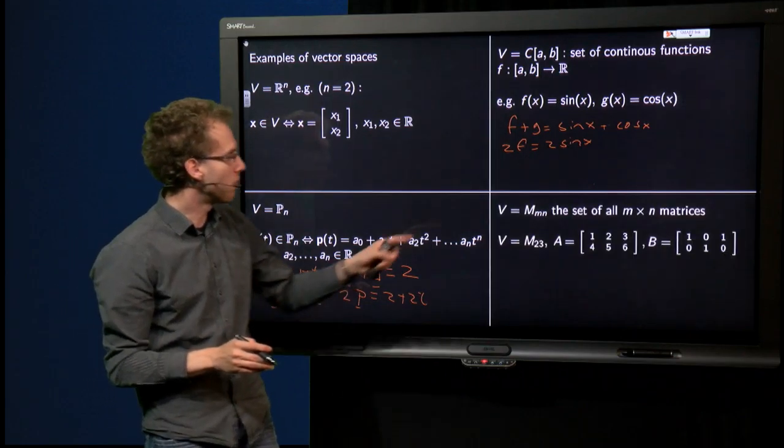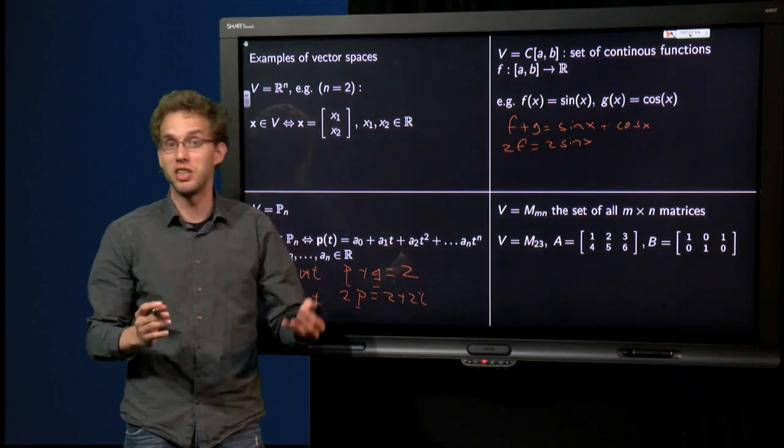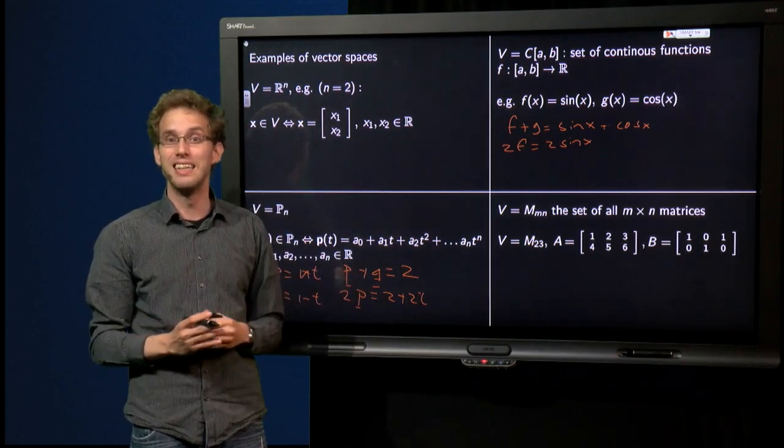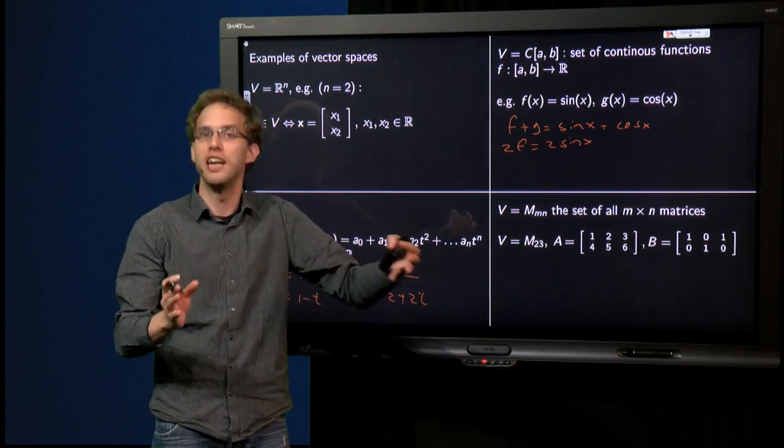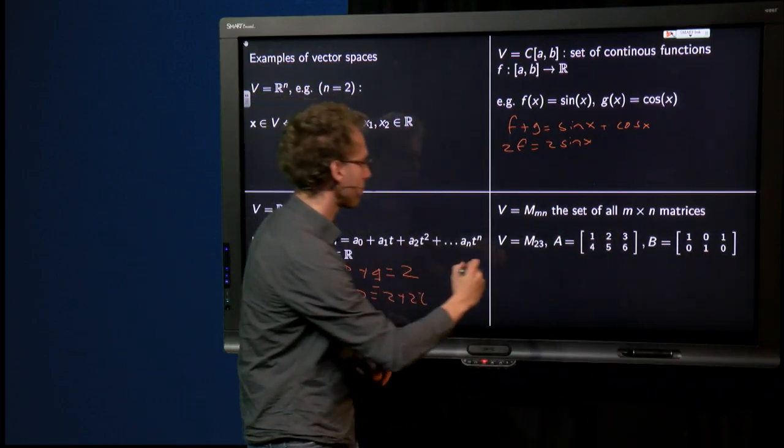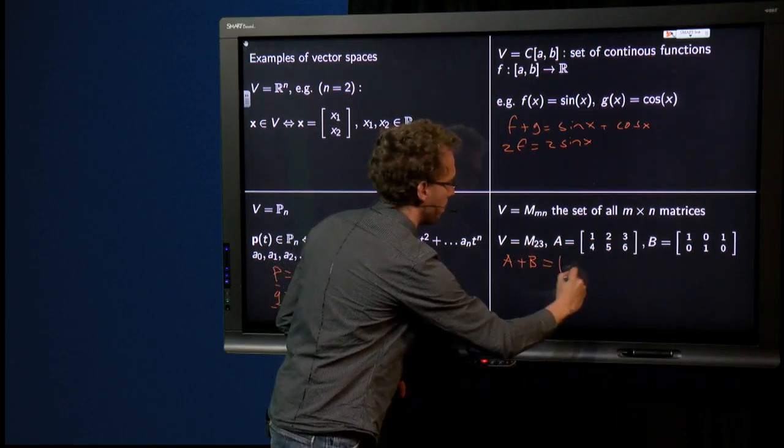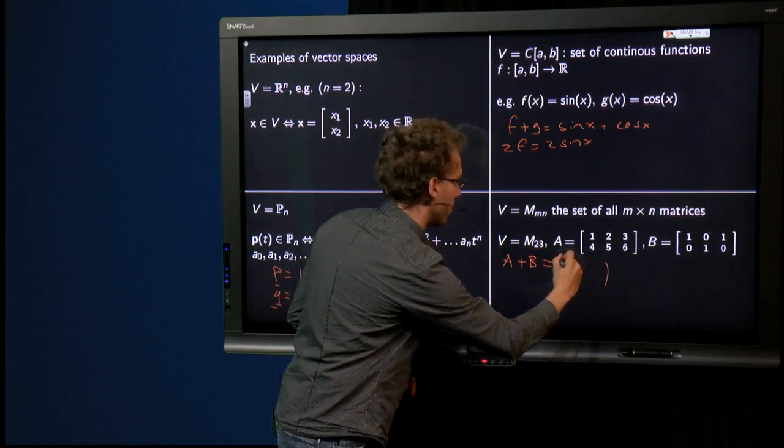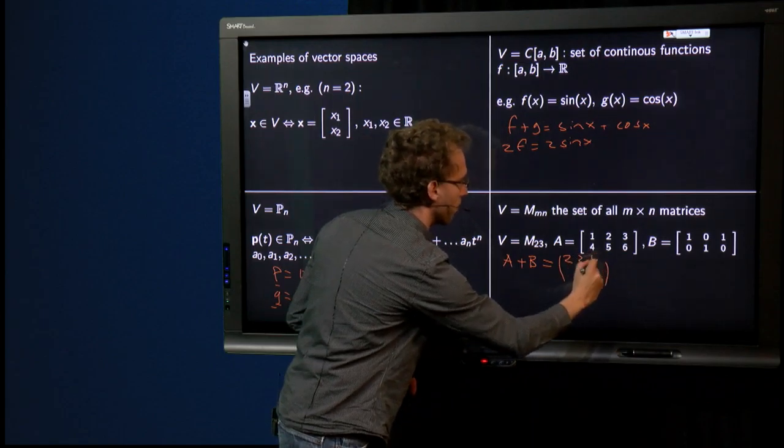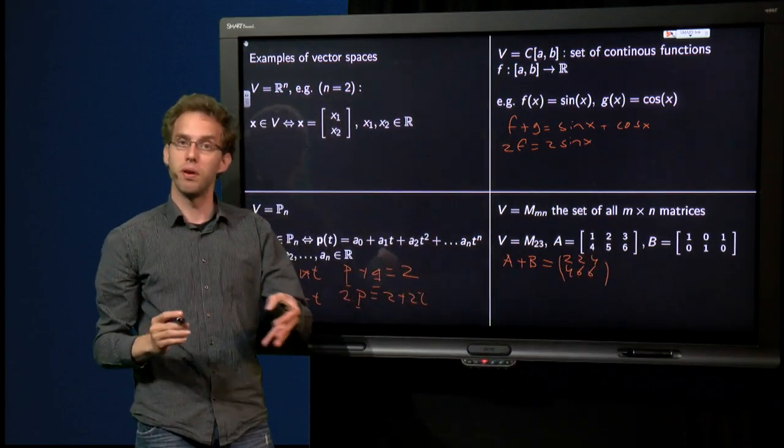Finally, let's look at a bit more exotic one. The set V is M_mn, the set of all m times n matrices. You could also define this as a vector space. It's just an illustration. Because if you add two matrices A and B, you know how to add them. It's componentwise. We get 2, 2, 4, 4, 6, 6. We get a new 2 by 3 matrix.